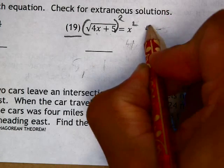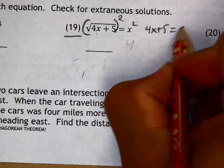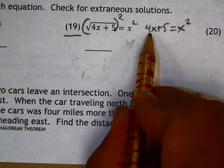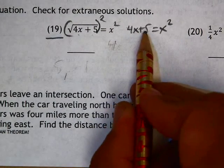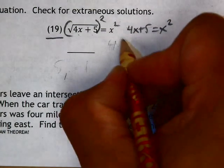We are left with 4x plus 5 equals x squared. I'll subtract 4x from both sides to move it over here, and subtract 5 to move it over here.